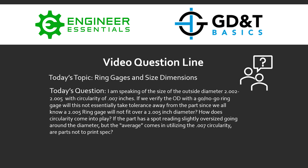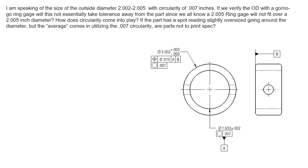If the part has a spot reading slightly oversized going around the diameter, but the average comes in utilizing the .007 circularity, are the parts not to print spec? Let's take a look at the part. What we have going on is a size tolerance. For those unfamiliar with Rule Number One, size tolerances also control the form of this feature. Rule Number One states that we must adhere to a perfect envelope at MMC when considering size and form of a feature of size.